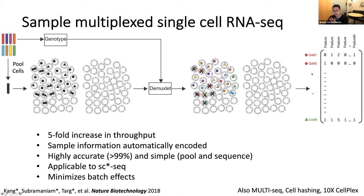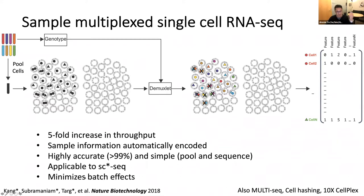The result of running multiplex single cell sequencing is that we get more cells per run of the instrument, and for each cell we can color them based on which donor they came from, as long as we have prior genotype information. The throughput increase on the prep side is about fivefold. Sample information is automatically encoded in the transcriptome of a cell, and we showed in our 2018 paper that this approach is highly accurate, very simple experimentally, and applicable to a number of single cell sequencing modalities — not just RNA sequencing but also single cell ATAC-seq.